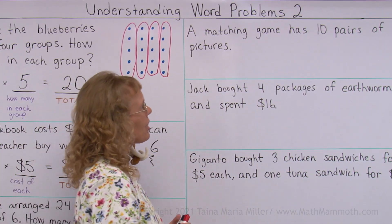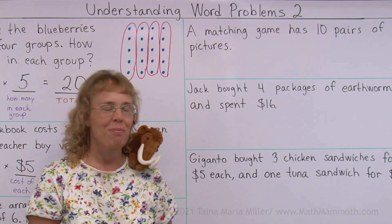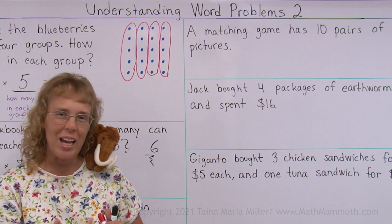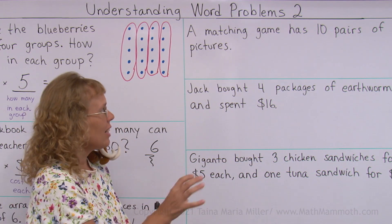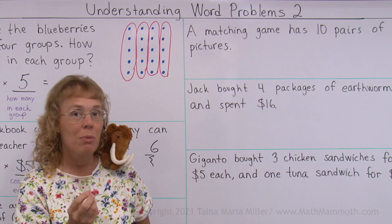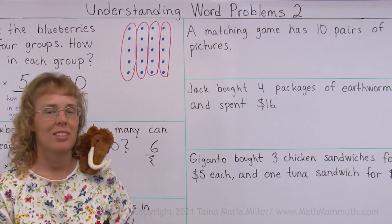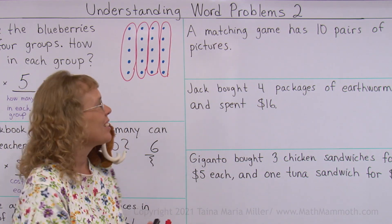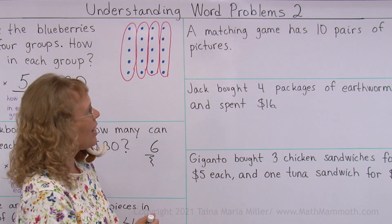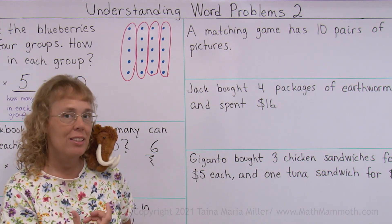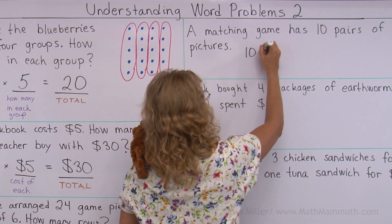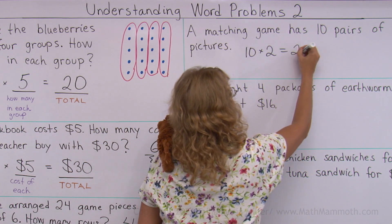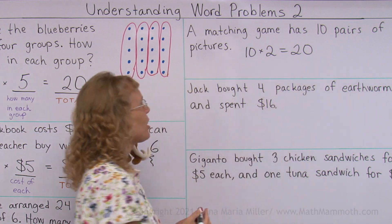A matching game has ten pairs of pictures. Again, no question. What could we ask? A matching game. You've played those, right? Ten pairs of pictures. How many pictures are there in total? How many in total? So we can multiply to find that because a pair means two, right? So this is ten times two equals twenty, and we have solved how many pictures in total.